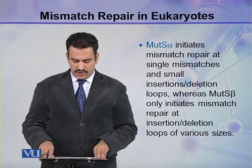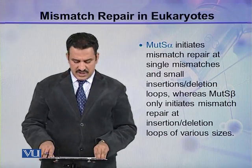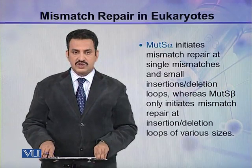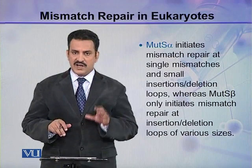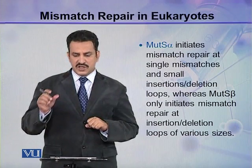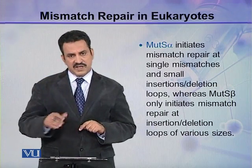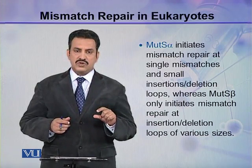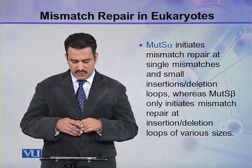MutS alpha initiates mismatch repair at single mismatches and small insertion-deletion loops, whereas MutS beta only initiates mismatch repair at insertion-deletion loops of various sizes. So MutS alpha can start repair at a single mismatch or small insertions/deletions, while MutS beta can only start repair when there are insertions or deletions of various sizes.